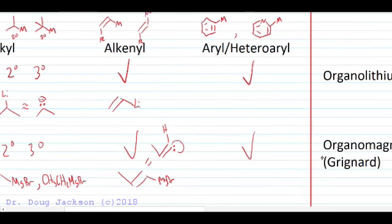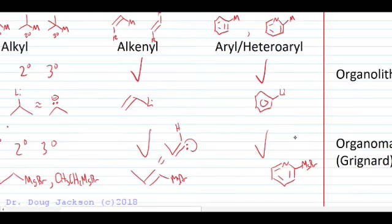Organolithiums and organomagnesiums also bond to aryls and heteroaryls. So we might see a phenyl lithium, or we might see substituted pyridine here. A halo substituted pyridine that would react with magnesium in an ether to make a Grignard reagent out of this heteroaryl complex. So very wide scope on the reagents for these.